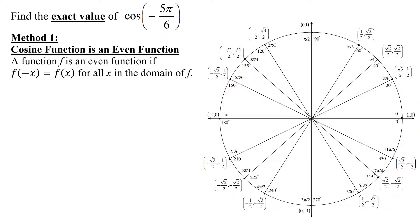The first method uses the fact that the cosine function is an even function. What do we mean by that? A function f is an even function if f(−x) = f(x) for all x in the domain of f. So knowing that the cosine function is an even function, we can say the cosine of negative 5π divided by 6 equals the cosine of positive 5π divided by 6.